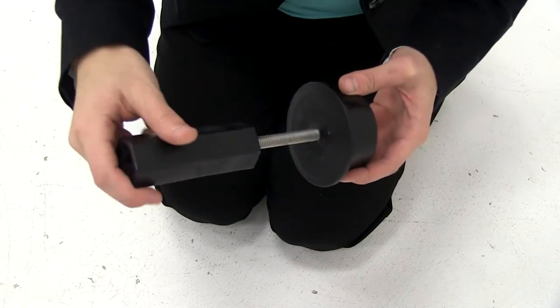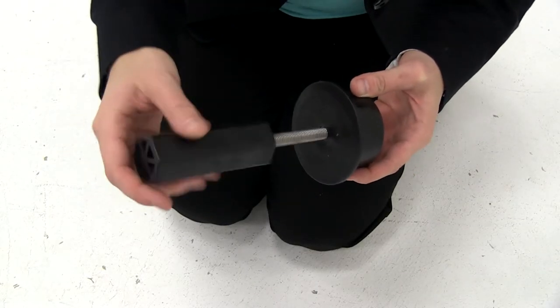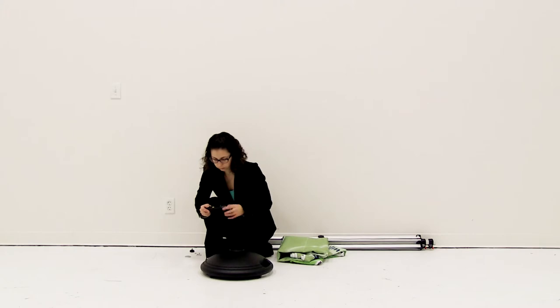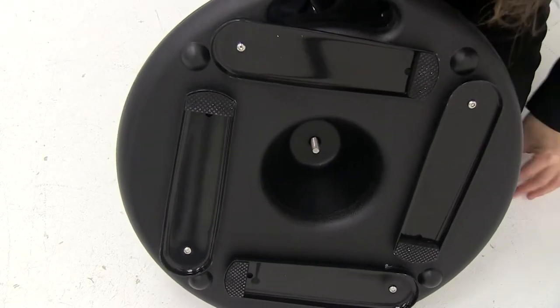Next, screw the base screw completely into the post support. Place the post support into the top of the base and flip over.